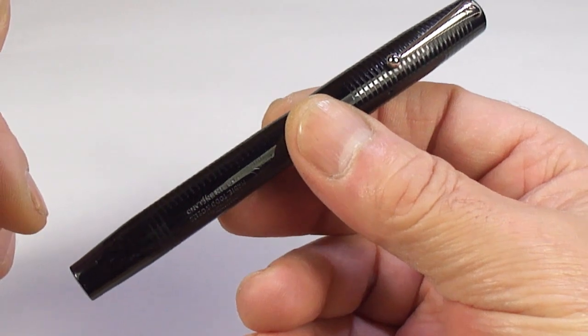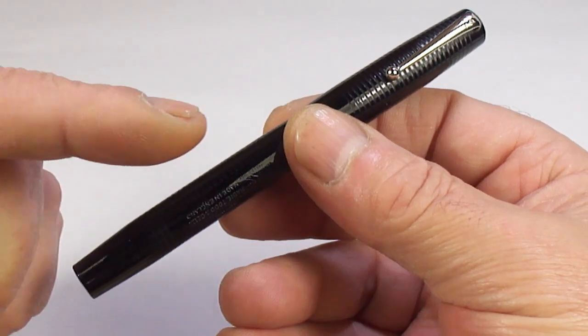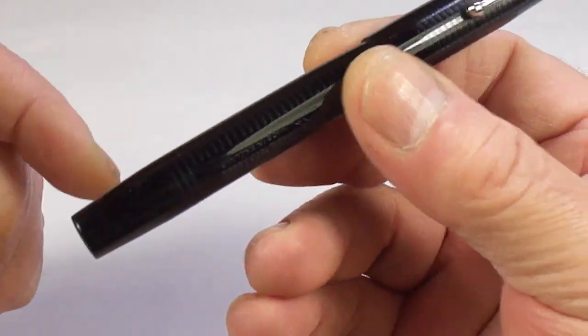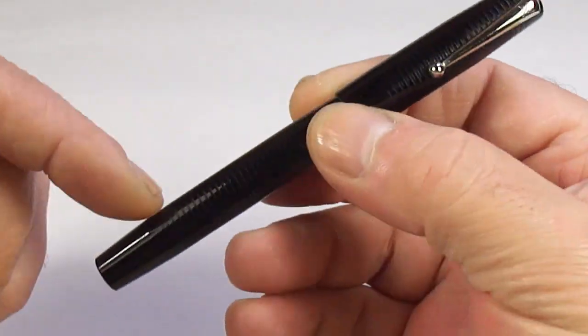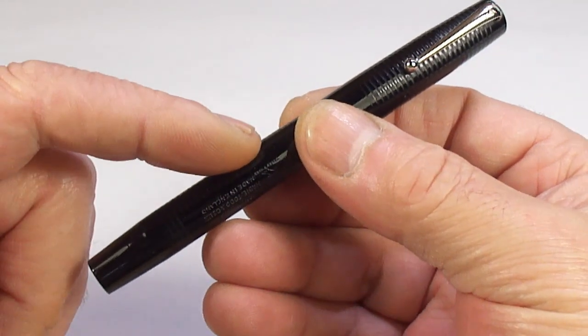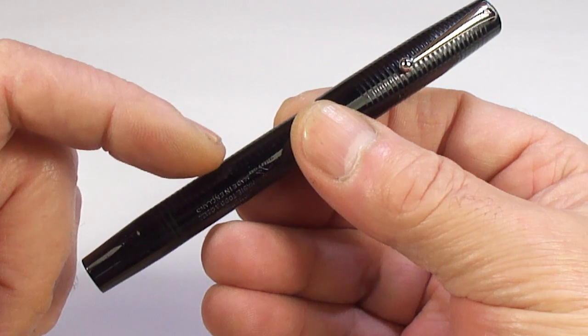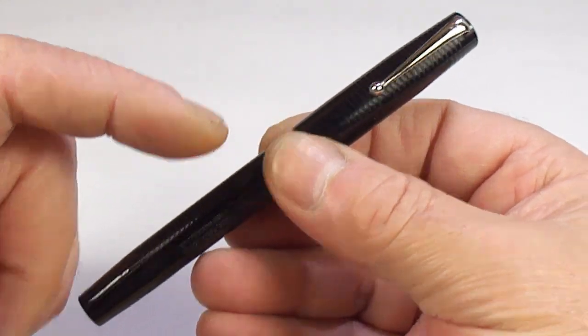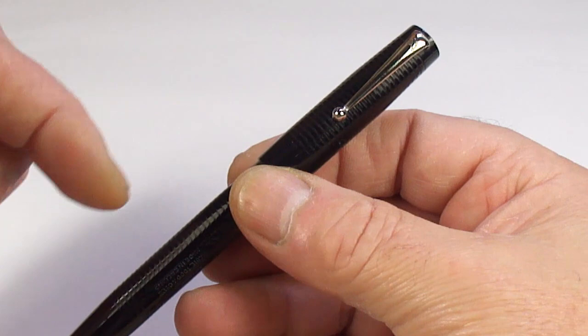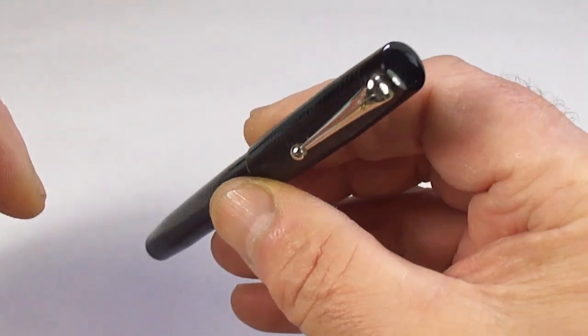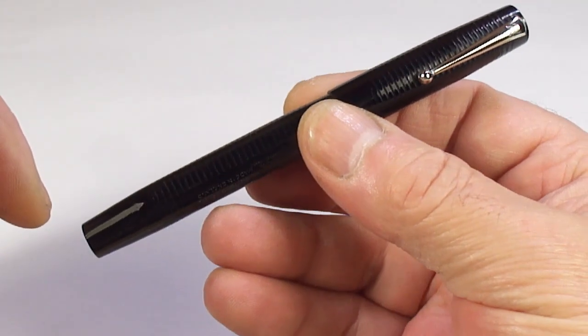This particular one, the BB-260, they made two variants. This one with the clip, and they also made, I think it was a slightly longer version of a BB-260, which was actually clipless, without a clip. So they made two variants of them.